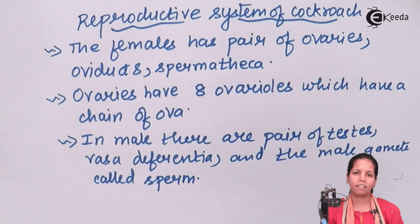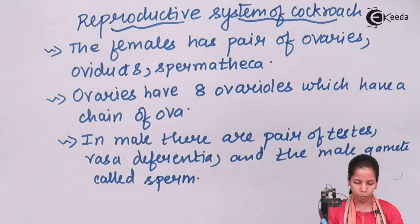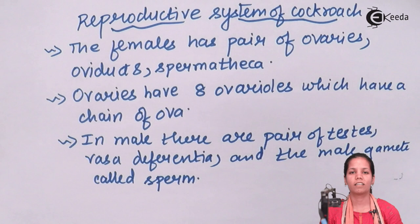So students, this was the reproductive tract of cockroaches. Obviously, if reproduction has to take place, the male gamete and the female gamete have to meet together, and once that happens, sexual reproduction in cockroaches takes place. In this part of the chapter we covered the reproductive system in cockroach. I hope we are all very clear with this concept. Thank you.